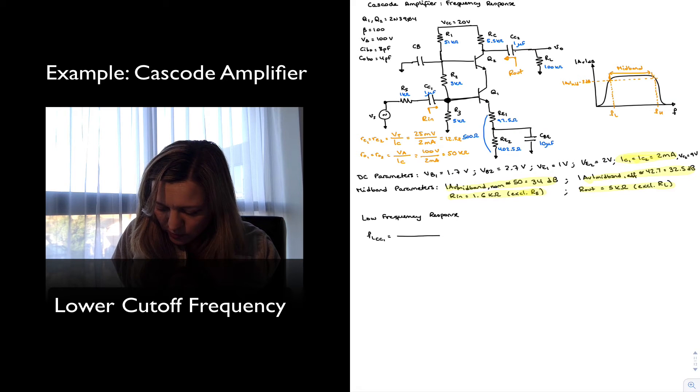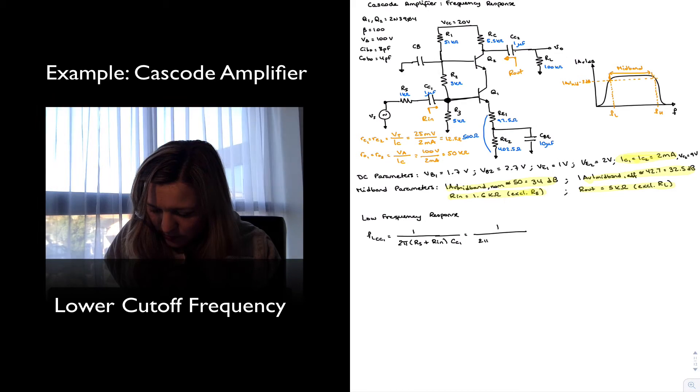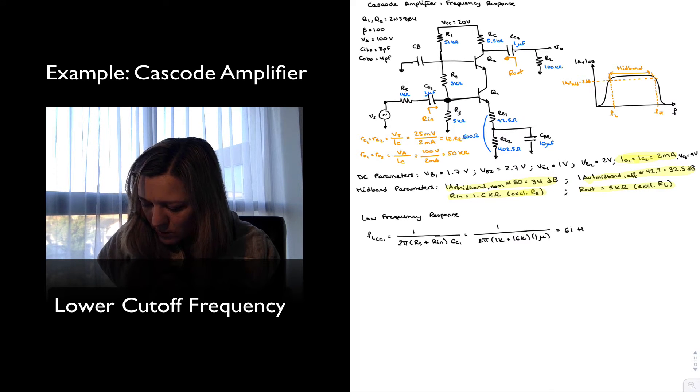So let's go ahead and calculate the low frequency due to CC1. And that's going to be 1 over 2π, the Thevenin resistance connected to CC1, which is RS plus RIN, times CC1. So 1 over 2π, 1k plus 16k times 1 micro. So that gives me 61 hertz.